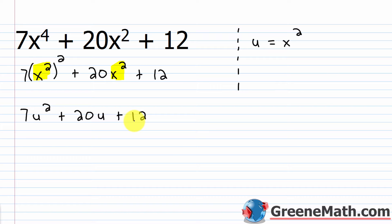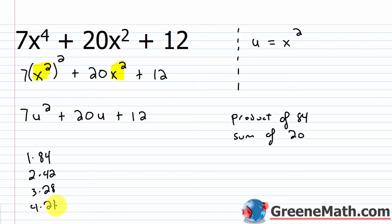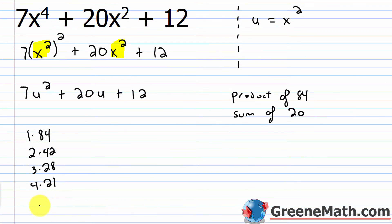We can use reverse FOIL or factoring by grouping. I prefer factoring by grouping. I want two integers whose product is 7 times 12, which is 84, and whose sum is the middle coefficient, 20. Thinking about factors of 84: 1×84 won't work, 2×42 won't work, 3×28 won't work, 4×21 won't work, but 6×14 works because 6 plus 14 equals 20. That's the combination.